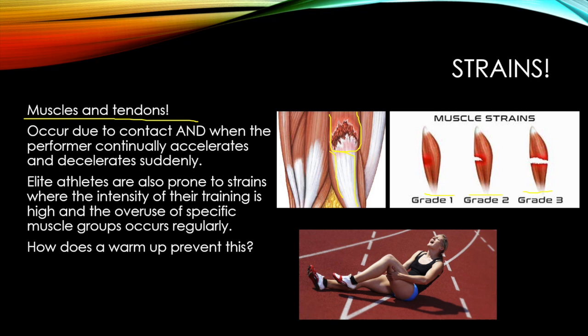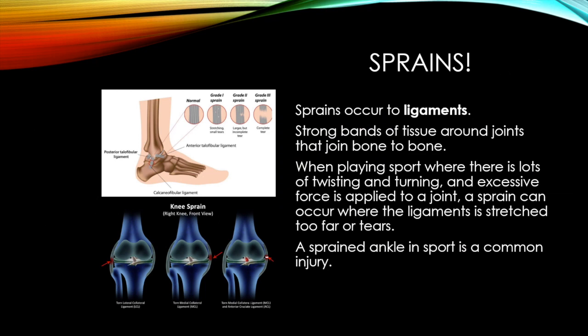Sprains are often confused with strains, but sprains occur to ligaments. A ligament is a tissue that joins bone to bone, linking two bones and holding them in place. In sport we have lots of twisting and turning, and if excessive force is applied to a joint, the ligament becomes stretched too far and tears. It's not the muscle that becomes stretched — it's the ligament. Again, there are grade one, grade two, and grade three sprains, where grade three is a complete tear of the ligament.